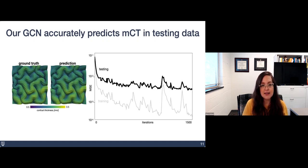So here I'm showing one of the test cases, both the ground truth and our GCN's predictions. If we look across the testing data sets, we see that the error, the mean squared error here, is really acceptable.